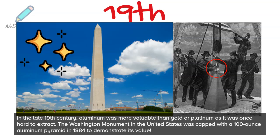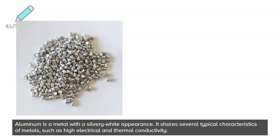Aluminum is a metal with a silvery white appearance. It shares several typical characteristics of metals, such as high electrical and thermal conductivity.